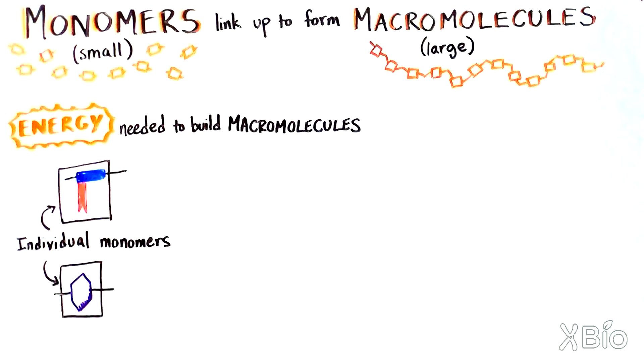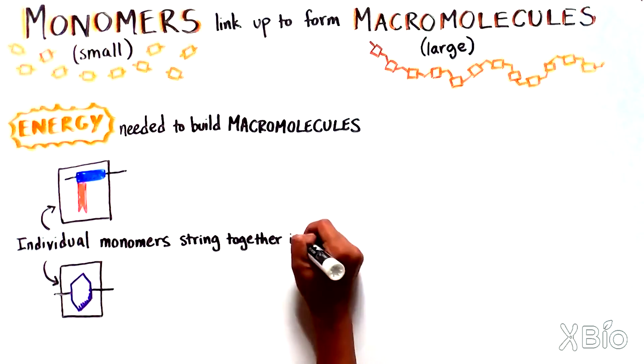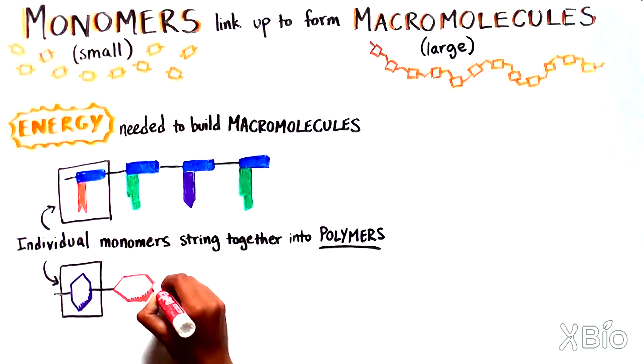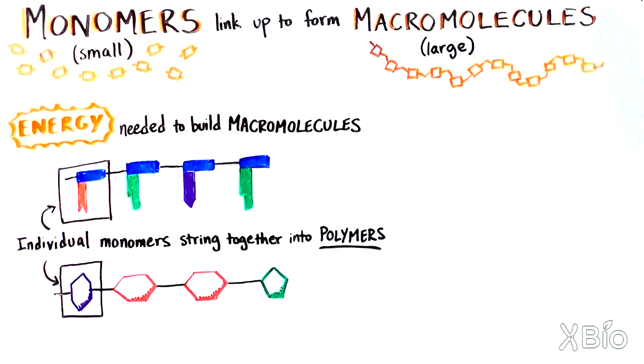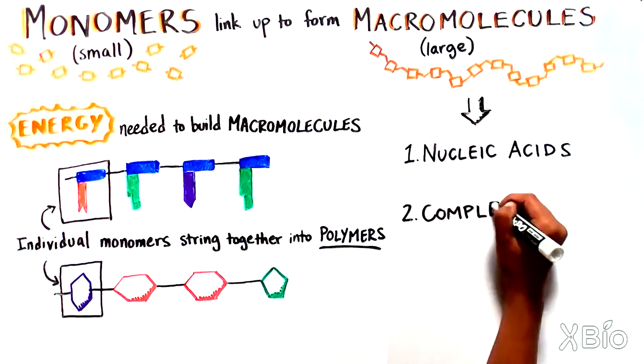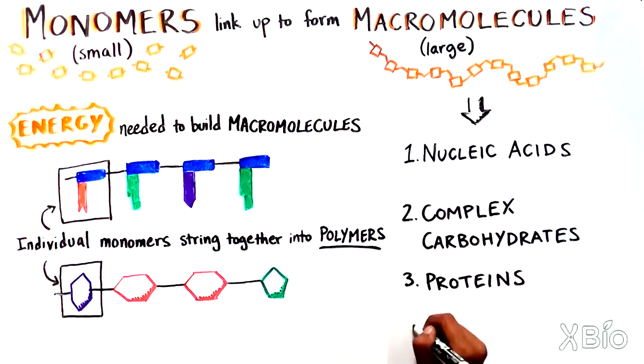The individual small molecule units can only attach to another monomer in two places. Stringing several monomers together end-to-end gives a polymer, or large macromolecule. We'll next talk about the four main types of macromolecules: nucleic acids, complex carbohydrates, proteins, and lipids.